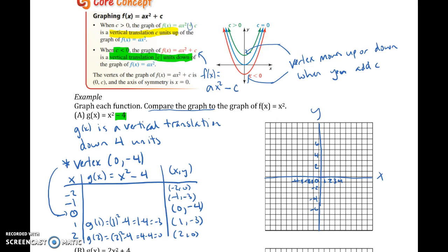Let's go ahead and graph these points. So (-2, 0), there you go, (-2, 0), (-1, -3), (0, -4), (1, -3), (2, 0). Looks like a great parabola right there. And that's really it.